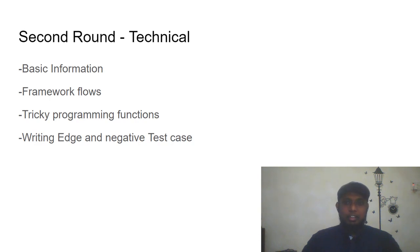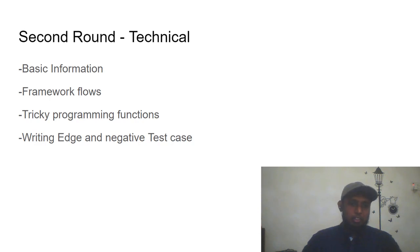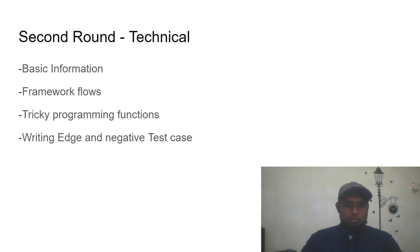They also ask tricky programming questions — for example, the difference between 'final', 'finally', and 'static'. After that, they give a scenario — like writing edge and negative test cases for a pen or a book. While there is a dedicated test craftsmanship round later, this round is roughly 80% automation and 20% testing, concentrating on the tricky automation aspects. They ask for edge and negative test cases that would impact overall testing coverage.